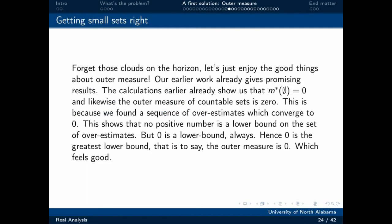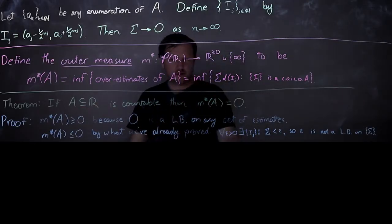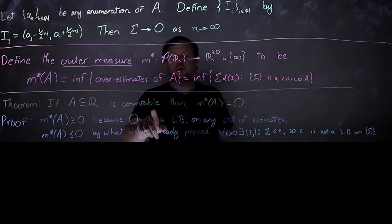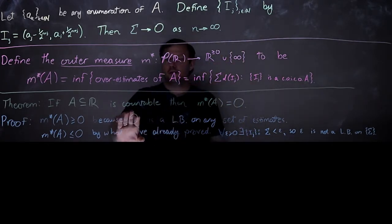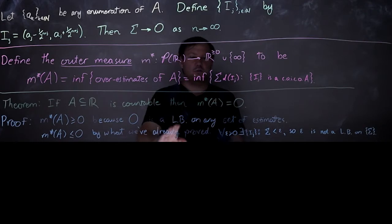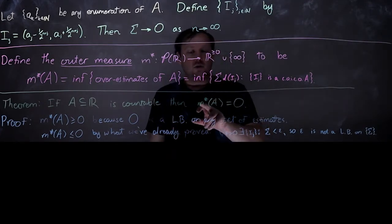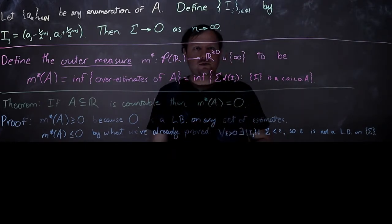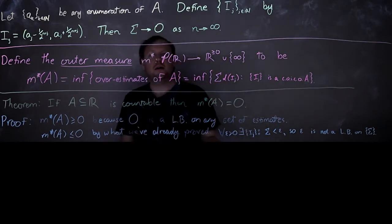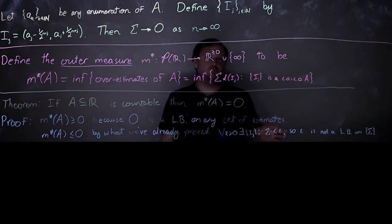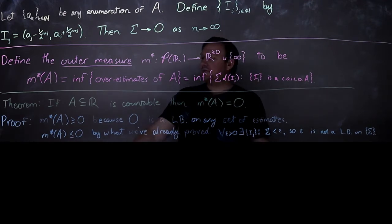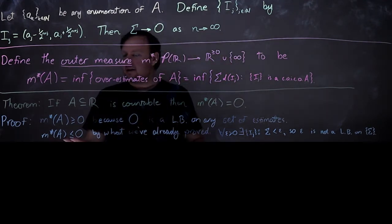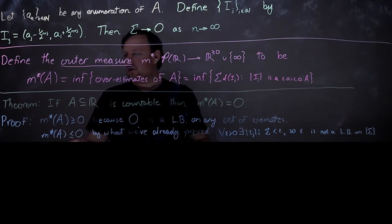Now let's do an exercise in computing M*. In particular, let's return to the example of any countable subset of the real numbers and argue that M* of A is equal to zero. We've effectively already shown that M* of A is less than or equal to zero.